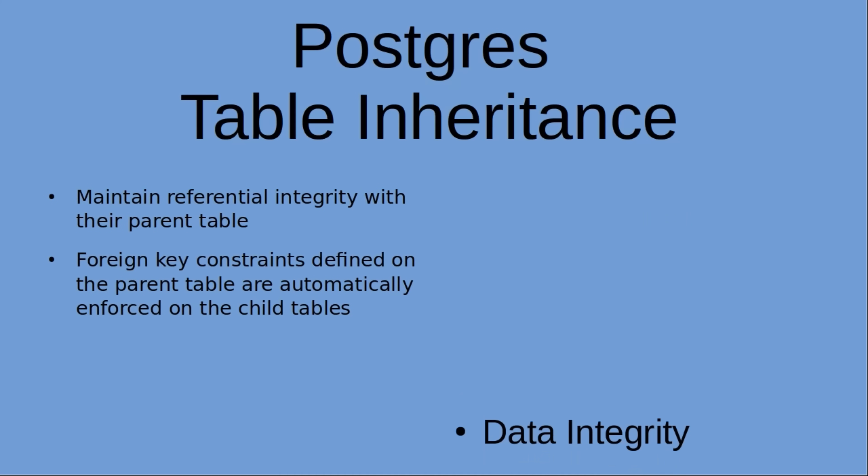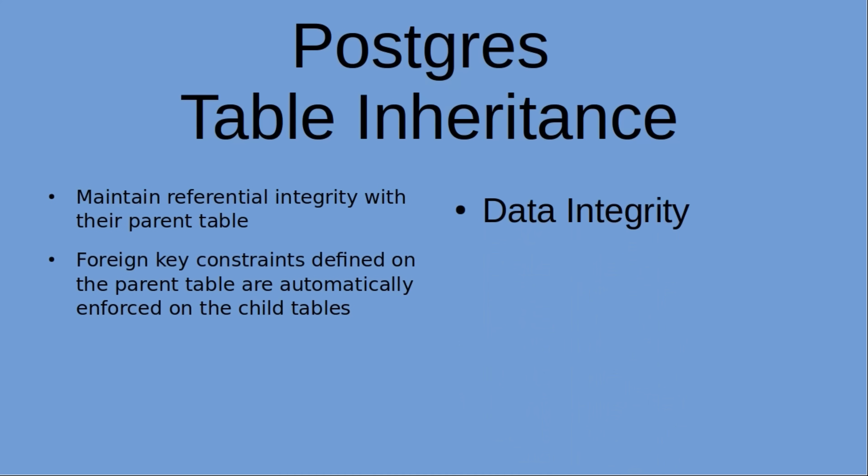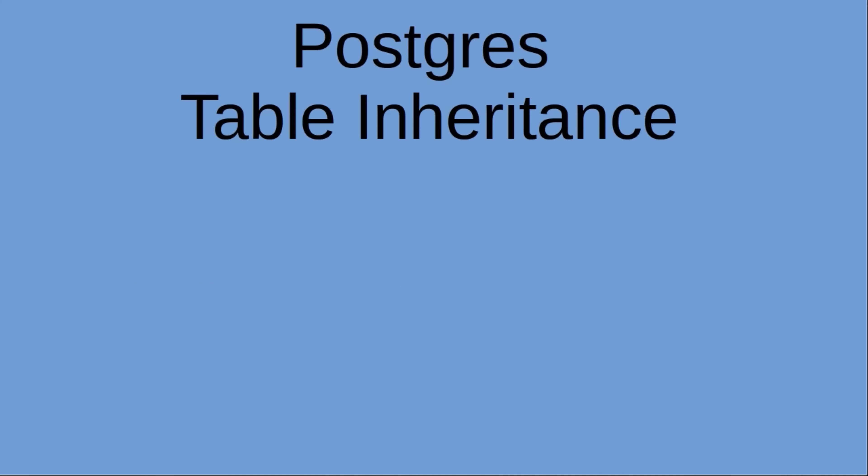Fourth, data integrity. Inherited tables maintain referential integrity with their parent table. Foreign key constraints defined on the parent table are automatically enforced on the child table, ensuring data consistency and preventing referential integrity issues.